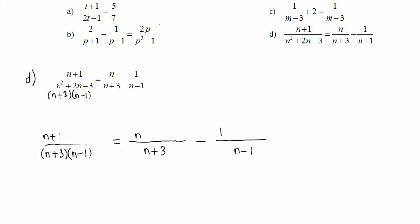The least common denominator is composed of the different factors, n plus 3 times n minus 1. In an equation, we can multiply each fraction on both sides of the equal sign by that least common denominator.